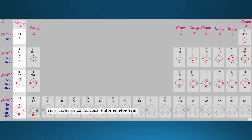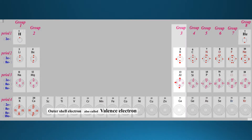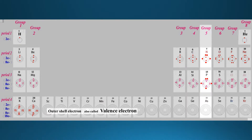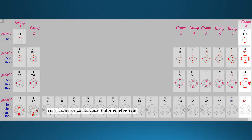As I show you on group one, you have one outside electron, so the valence electron count is one. Group two has two outside electrons, so the valence electron is two. Continuing: three valence electrons, four, five, six, seven, and eight valence electrons across the groups.